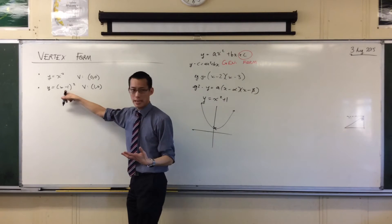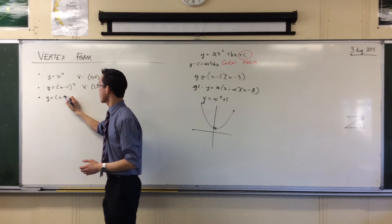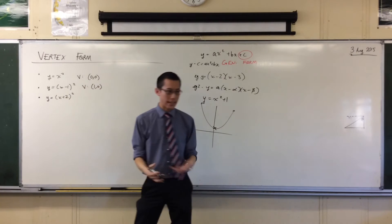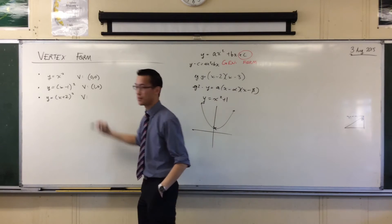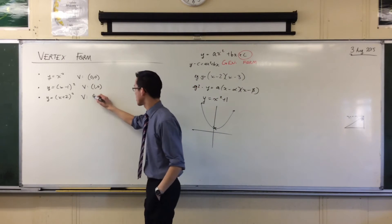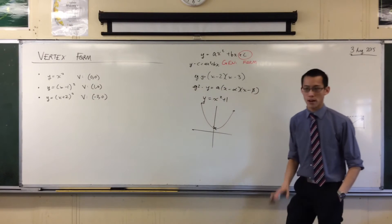If I take away something, I go to the right, then it stands to reason if I add something, which way am I going now? I'm going to the left, right? Where's the vertex this time? Negative two. So it's negative two, and I haven't gone anywhere vertically. So, so far, so good.